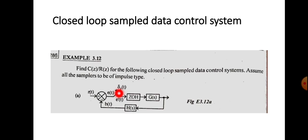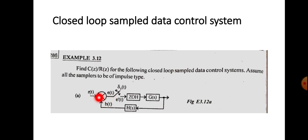In the closed loop system, the sampler is a symbol sampler, the input is r(t), and the output is c(t). To find C(z)/R(z), we analyze the forward path and feedback path separately. At the output of the adder we mark the error signal e(t), and the feedback signal is b(t). The sampled version of e(t) is e*(t).